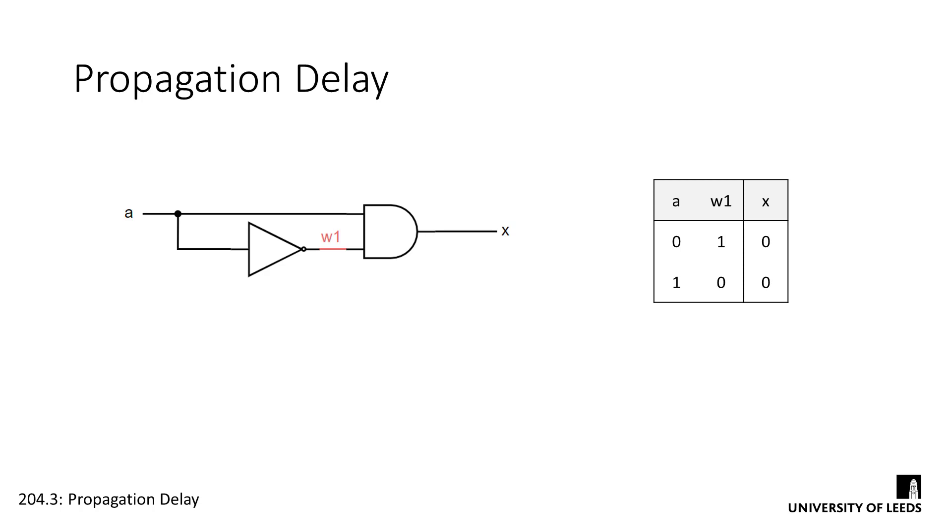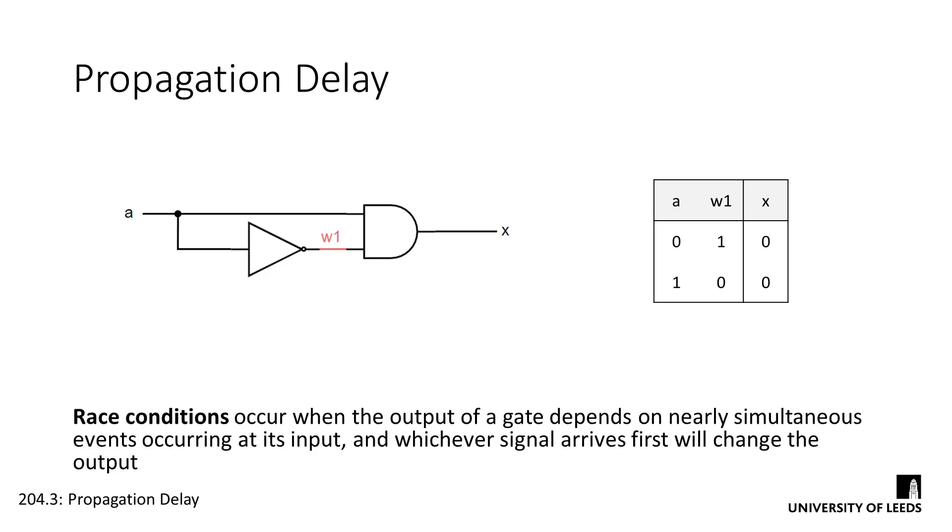However, the physical properties of the NOT gate performing the inversion will delay the signal passing through it and a race condition will occur at the input of the AND gate. Race conditions happen when the output of a gate depends on nearly simultaneous events occurring at its input and whichever signal arrives first will change the output.